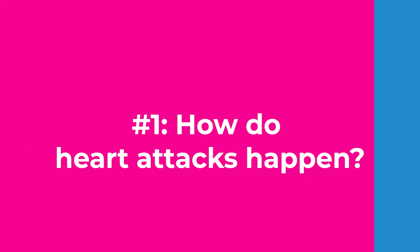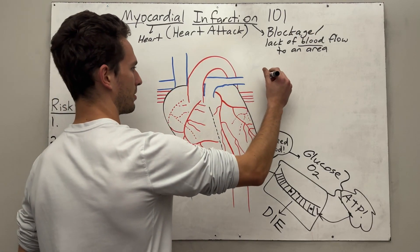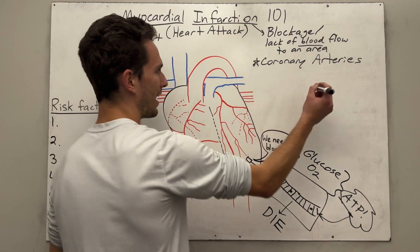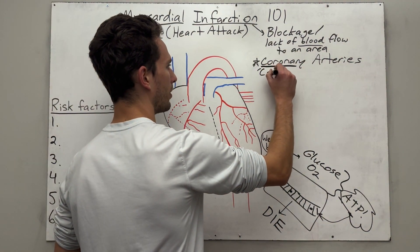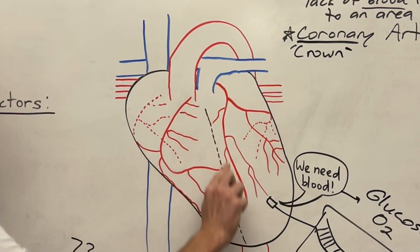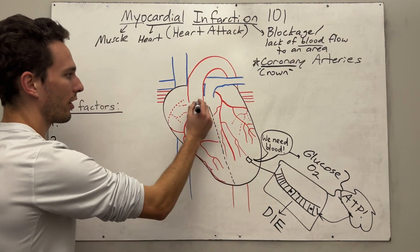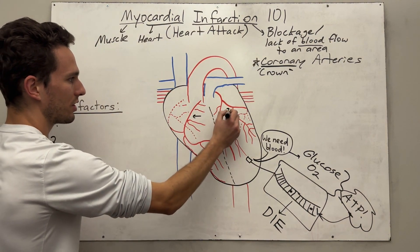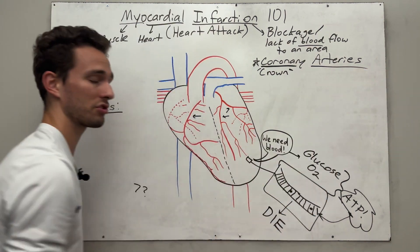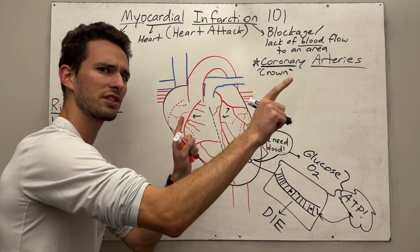The way your heart is fed blood supply is through what's called the coronary artery system. If you break the word down, corona refers to crown — because if you look at the heart, there are some vessels crowning the heart, kind of like this. That's what the coronary arteries are. Arteries are blood vessels that carry blood away from the heart itself after it pumps.